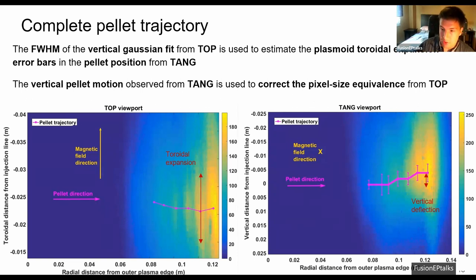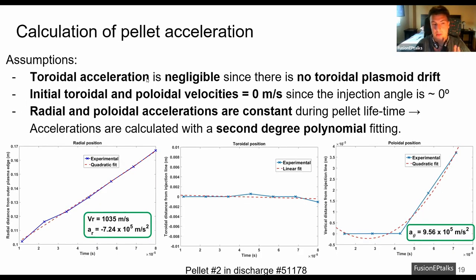Then from these pellet trajectories, we can calculate the pellet accelerations. But for that, some prior assumptions are needed. The first one is that the toroidal acceleration is assumed negligible since there is no toroidal plasmoid drift. And this assumption is confirmed here. We can see that there is mainly no acceleration. Then the initial toroidal and poloidal velocities are assumed zero since the injection velocity is purely radial. And finally, the radial and poloidal acceleration are assumed constant during the whole pellet lifetime. So second degree polynomial fitting is done to the experimental observations to calculate the acceleration.